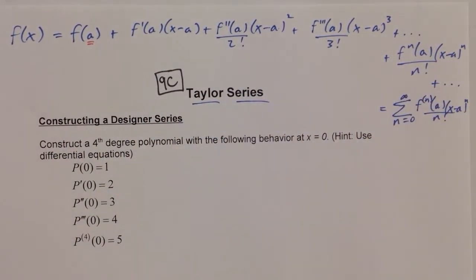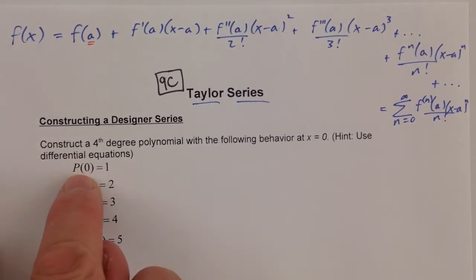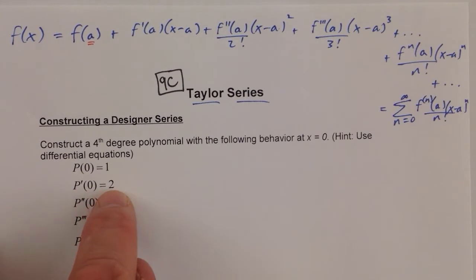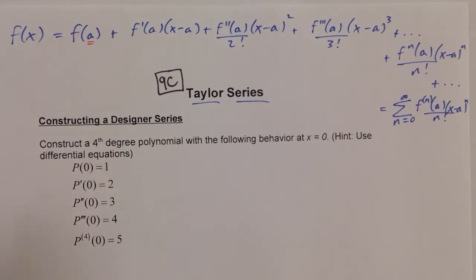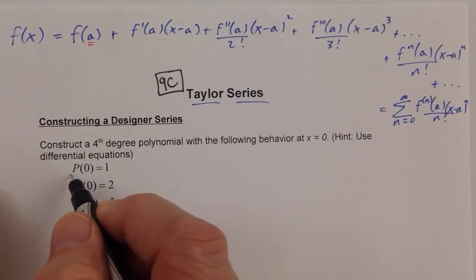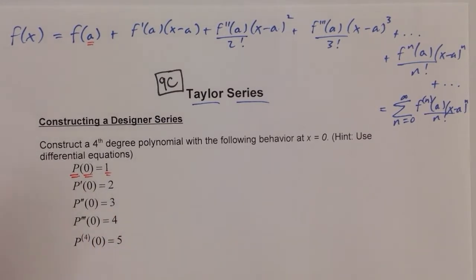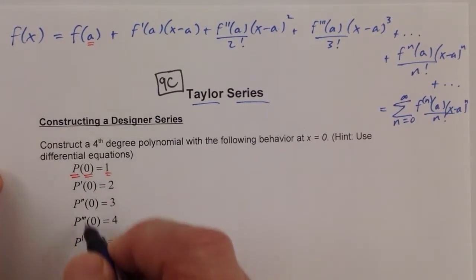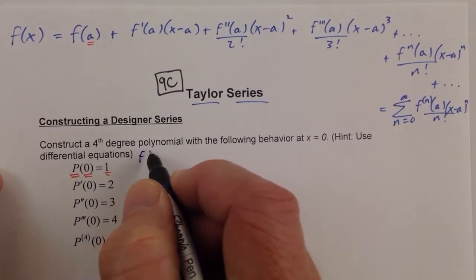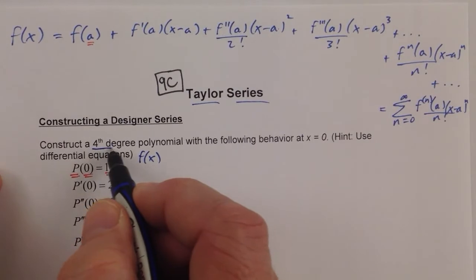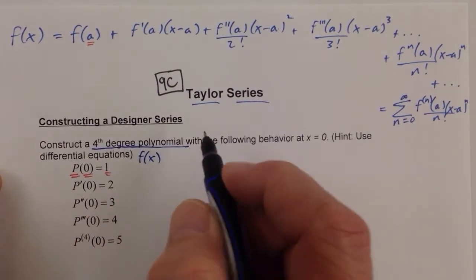We're noticing different notation here: p at 0 is 1, p prime at 0 is 2. That really stands for the polynomial's value at 0 is 1. Let's make this specific to this example. We know that f of x — construct a fourth degree polynomial.